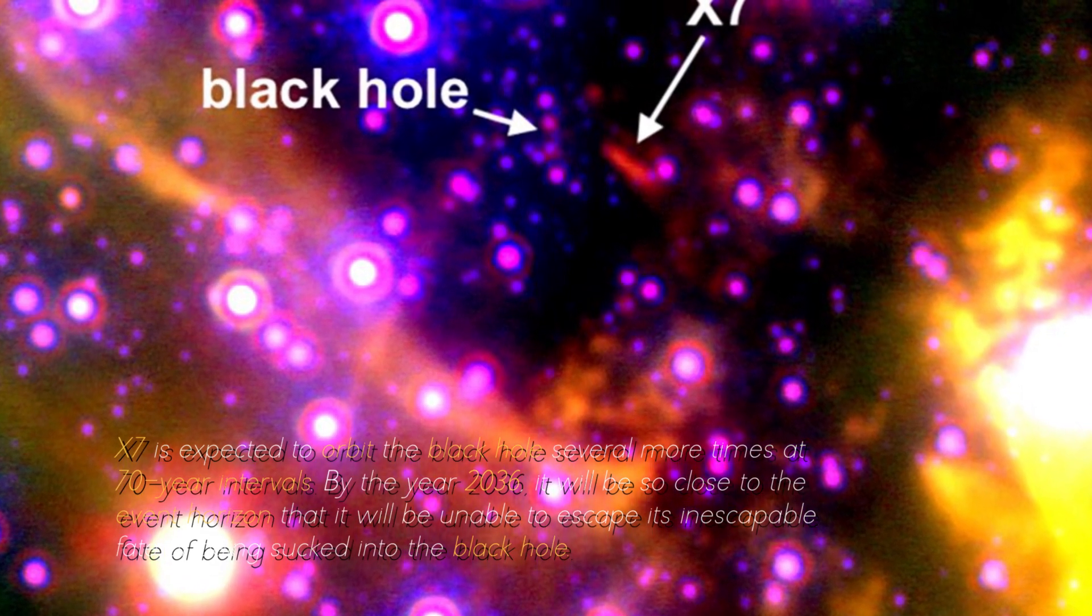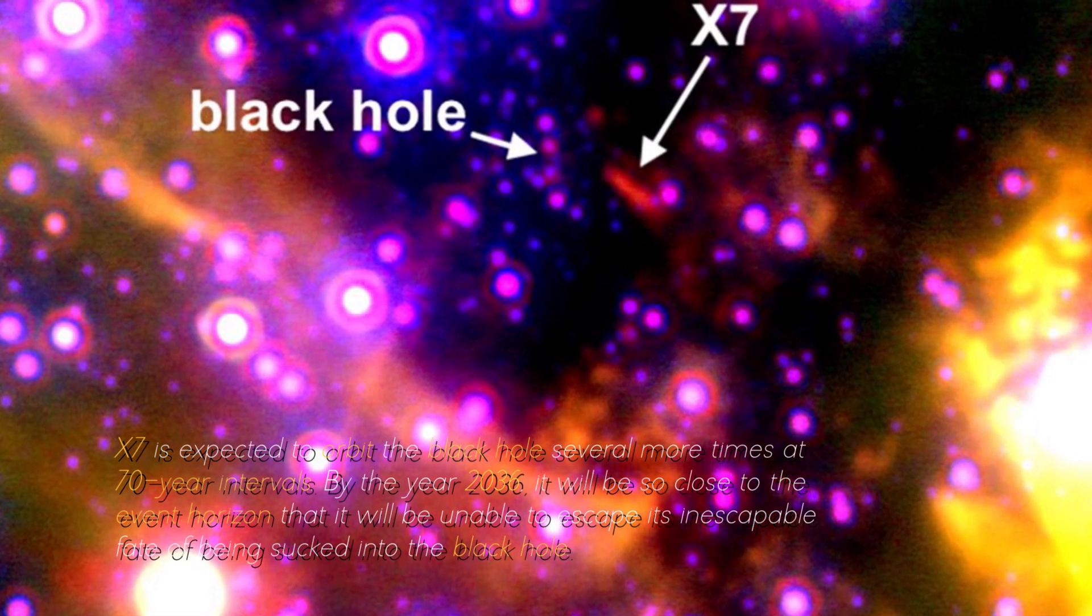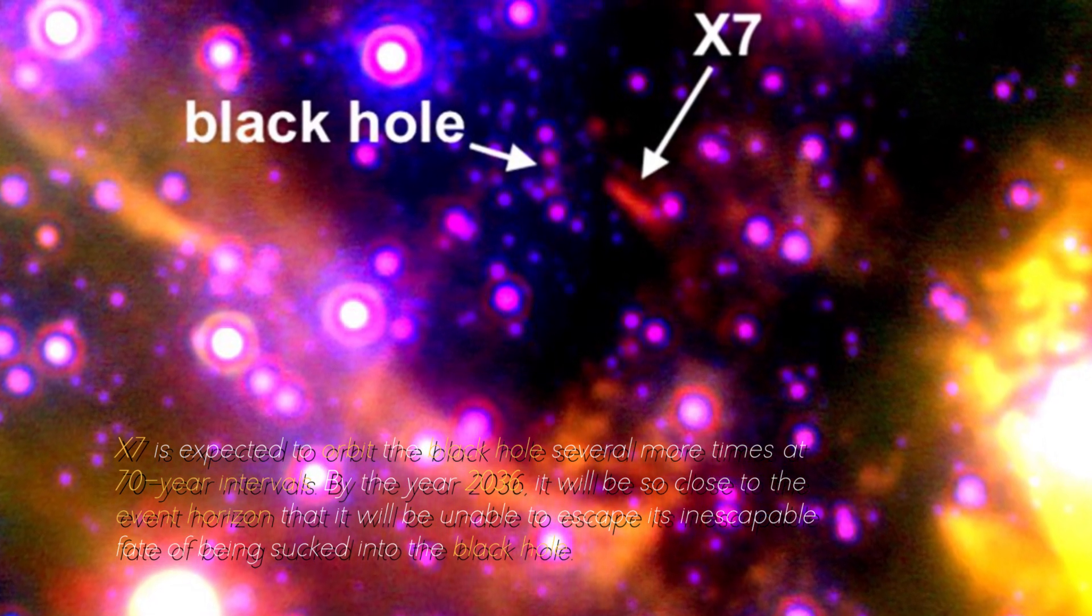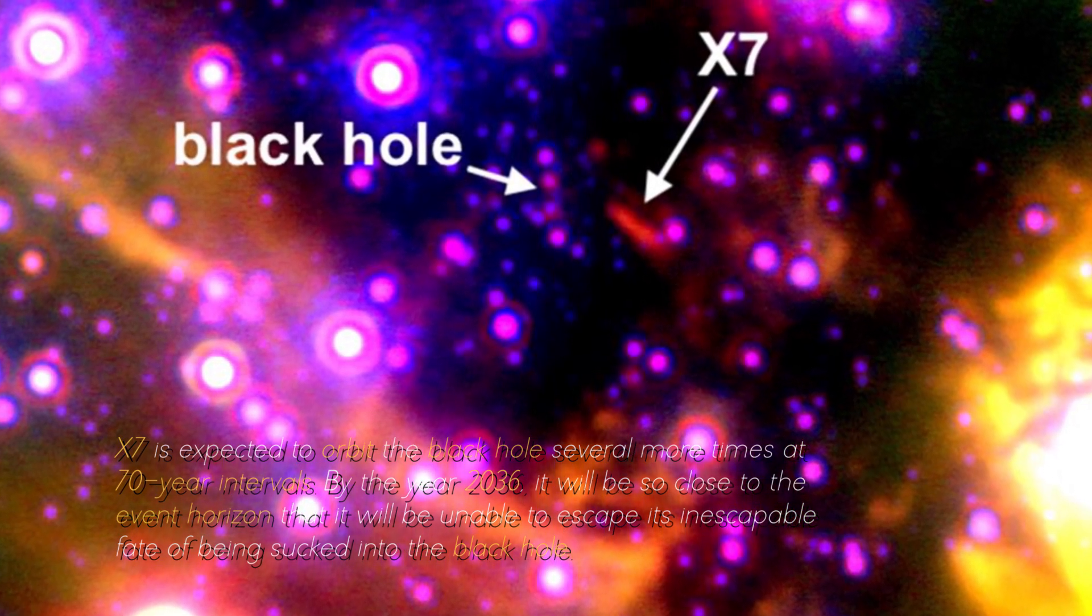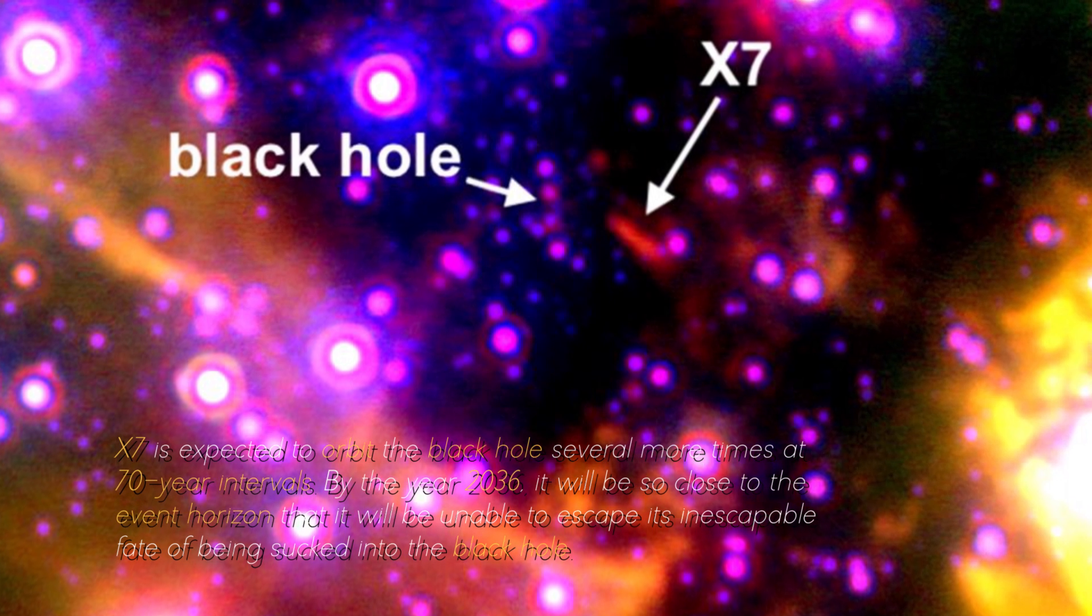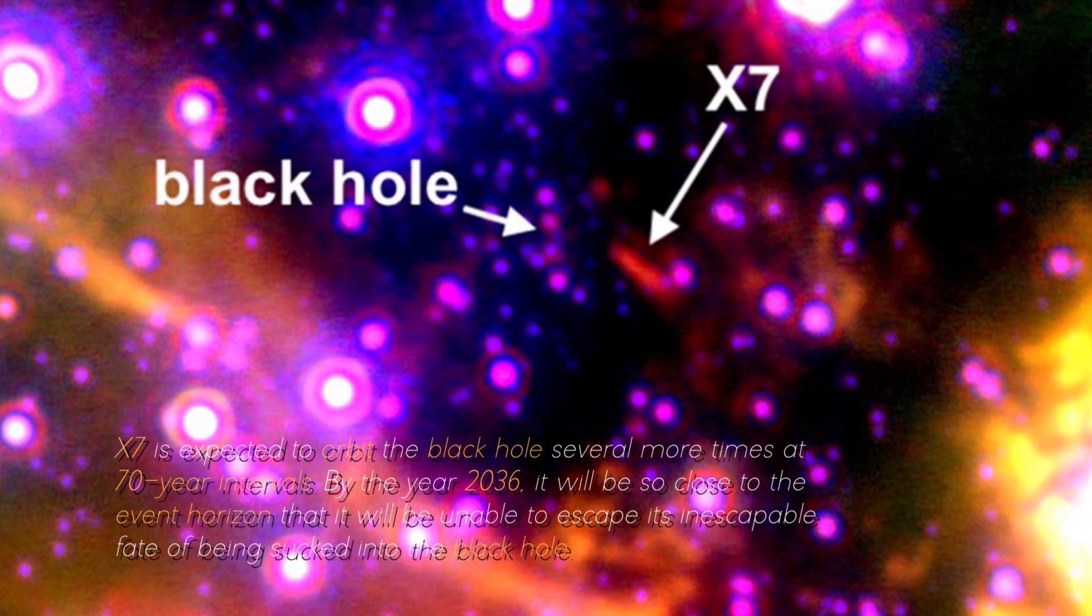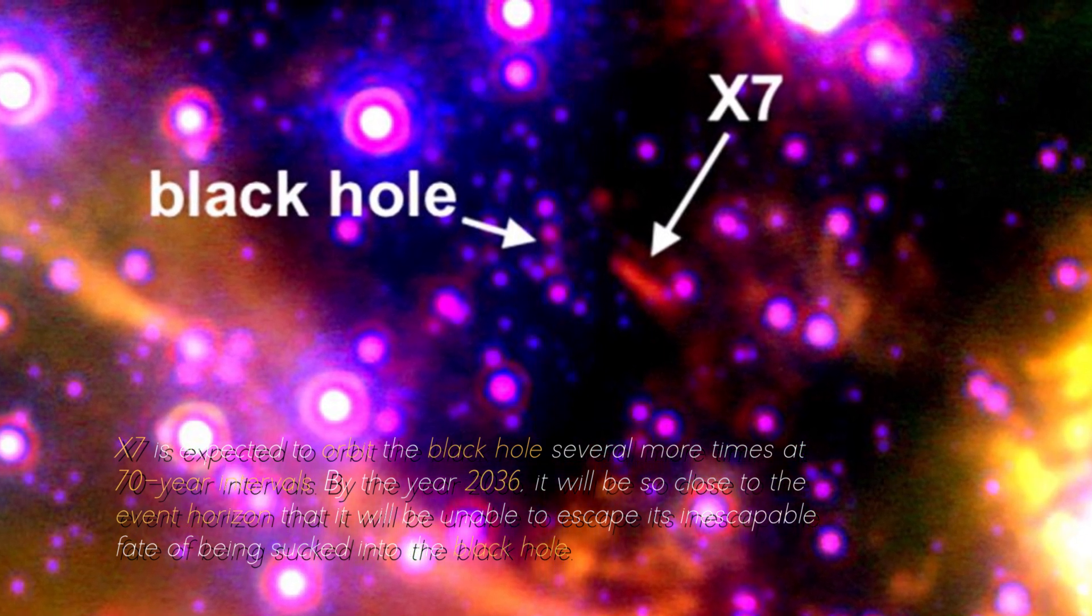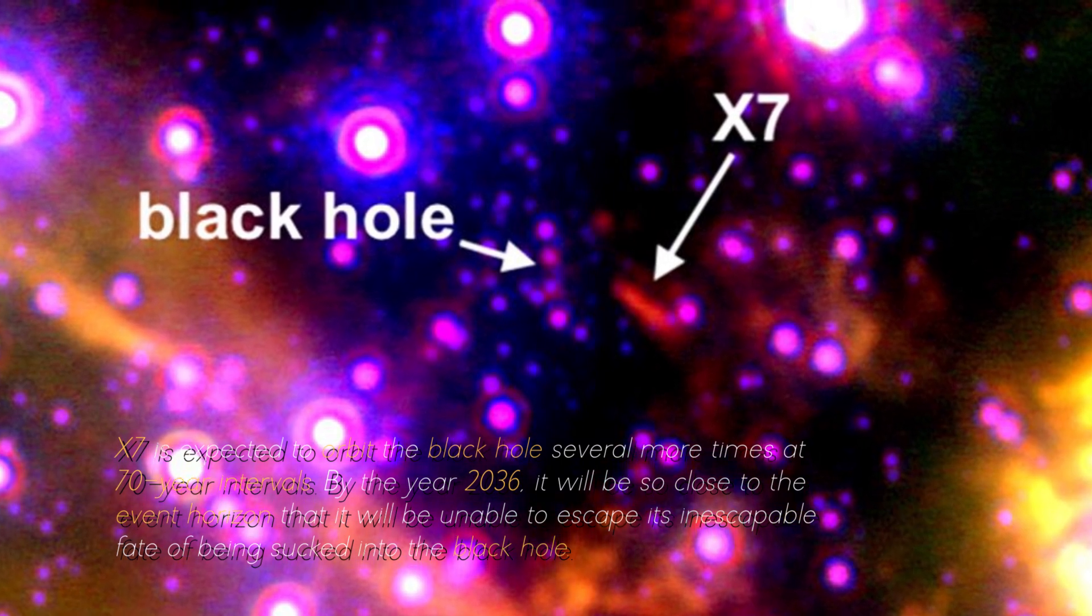X7 is expected to orbit the black hole several more times at 70-year intervals. By the year 2036, it will be so close to the event horizon that it will be unable to escape its inescapable fate of being sucked into the black hole. The immense cloud is heading towards its explosive end, finally disappearing into the center of the galaxy.